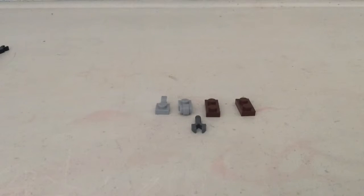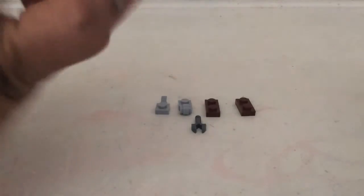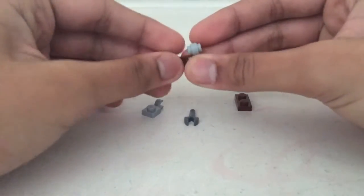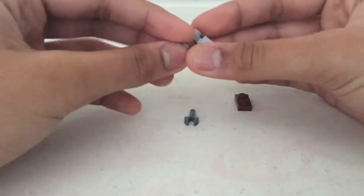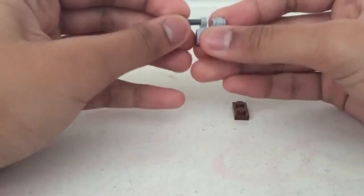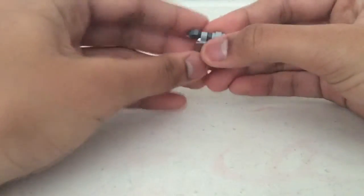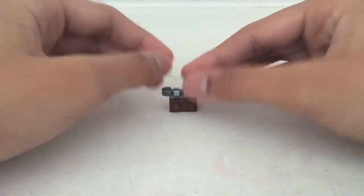Alright, let's build the first part of it. We start with this brown piece over here, and put this brick here. It's brick here. And put this over here, and there's the first part.